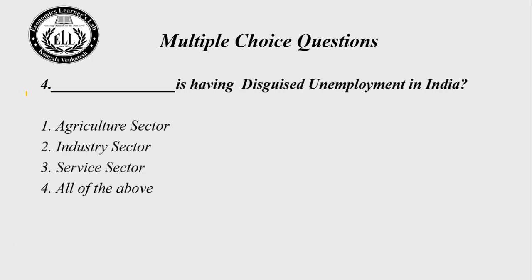Question 4: I will give you just 30 seconds for this question, try to solve yourself. The answer: Choice 1 — agriculture sector. The agriculture sector is associated with disguised unemployment.